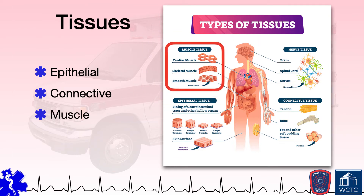Muscle tissue is another major category of tissues within the body. These tissues have the special ability to forcibly contract, shorten, and relax and lengthen to produce movement. Given this function, muscle tissues are often referred to as contractile tissue. Muscle tissue is highly cellular and well supplied by blood. We will look at the three different types of muscle tissue later in this presentation.